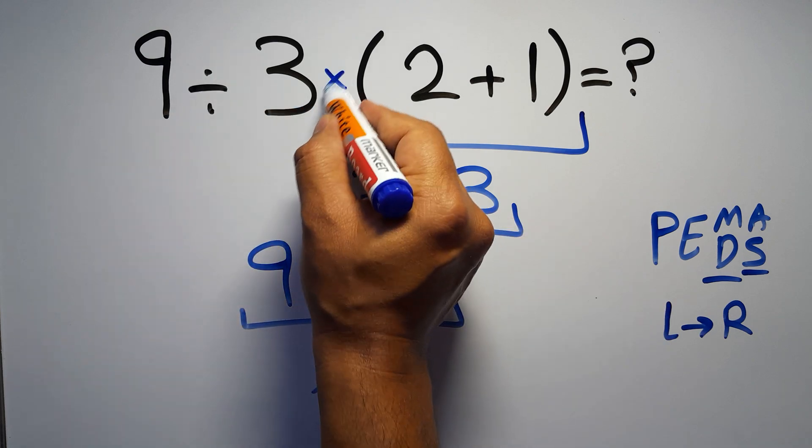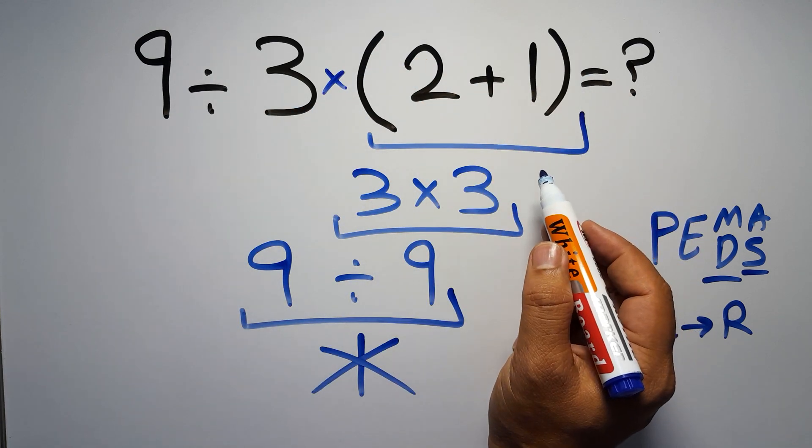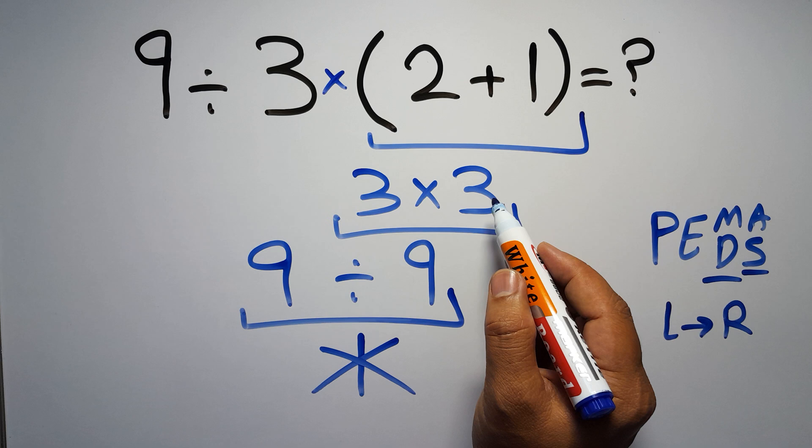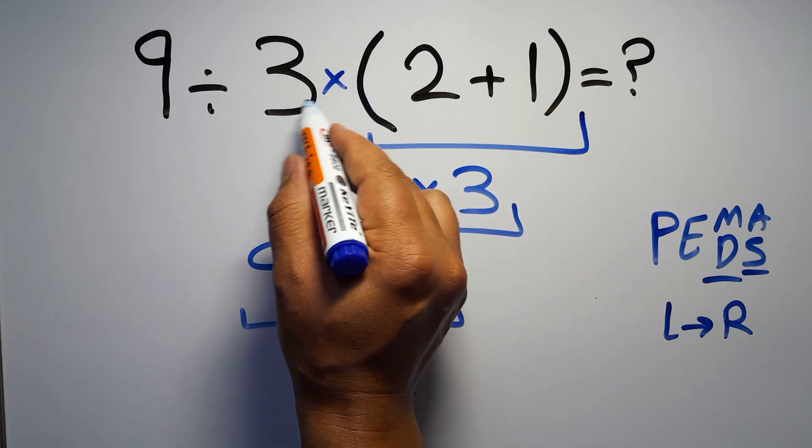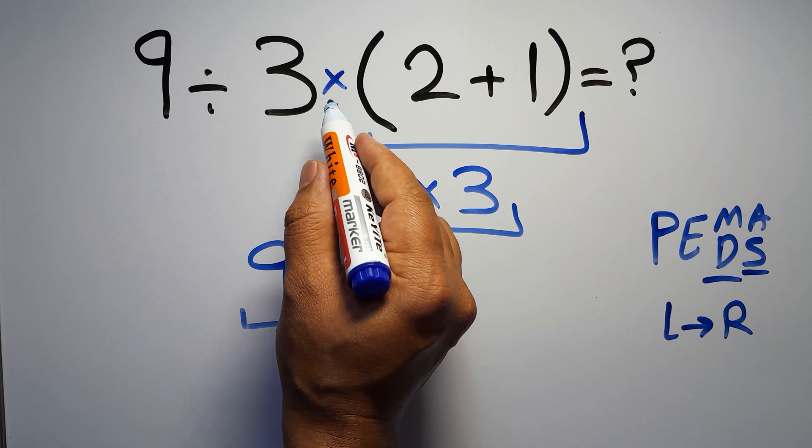one division, one multiplication, and one parentheses. Inside this parentheses we have one addition. Here we have a multiplication because in mathematics when a number is placed next to parentheses it means multiplication and we usually don't write the